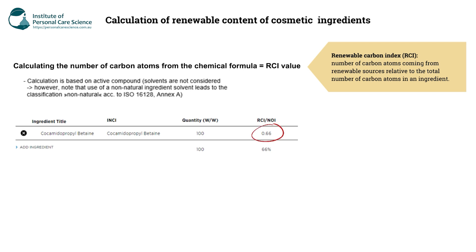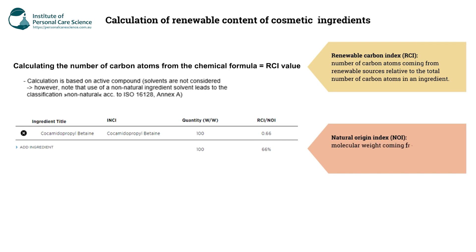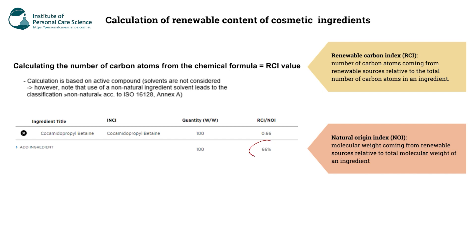From there you can work out the Natural Origin Index, also known as the NOI. This is the molecular weight coming from renewable sources relative to the total molecular weight of an ingredient. In this case, cocamidopropyl betaine has an NOI of 66%.